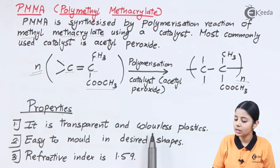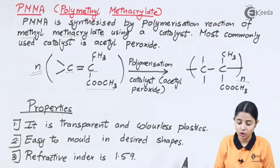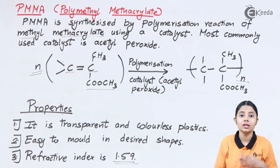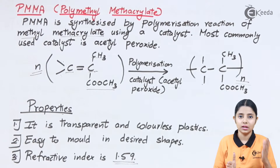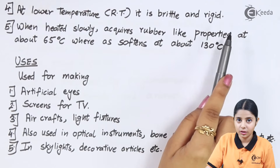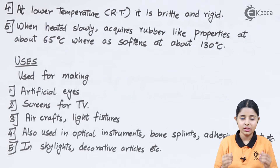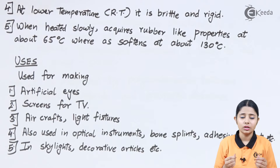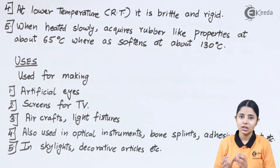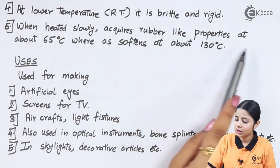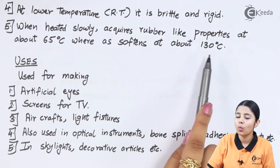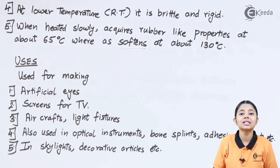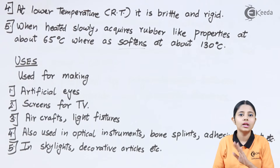Now let us see the properties of PMMA. It is a transparent and colorless plastic, easy to mold into desired shapes, and its refractive index is 1.59 — a very good refractive index that greatly increases its utility. At lower temperatures it is brittle and rigid, like TV screens which are rigid but also brittle. When heated slowly, it acquires rubber-like properties at about 65°C, and softens at about 130°C, at which point the solid polymer liquefies.